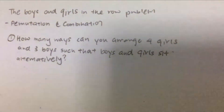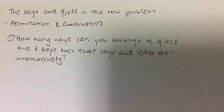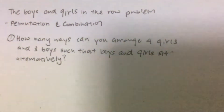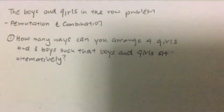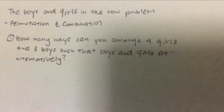Hey guys, this is Bob and welcome to the Mad Mad channel. Today we're going to tackle the boys and girls in a row problem, which is a very common problem in permutation and combination. The idea is to ask questions about girls and guys and how many ways you can arrange them in a row. There are a few kinds of questions that you may encounter.